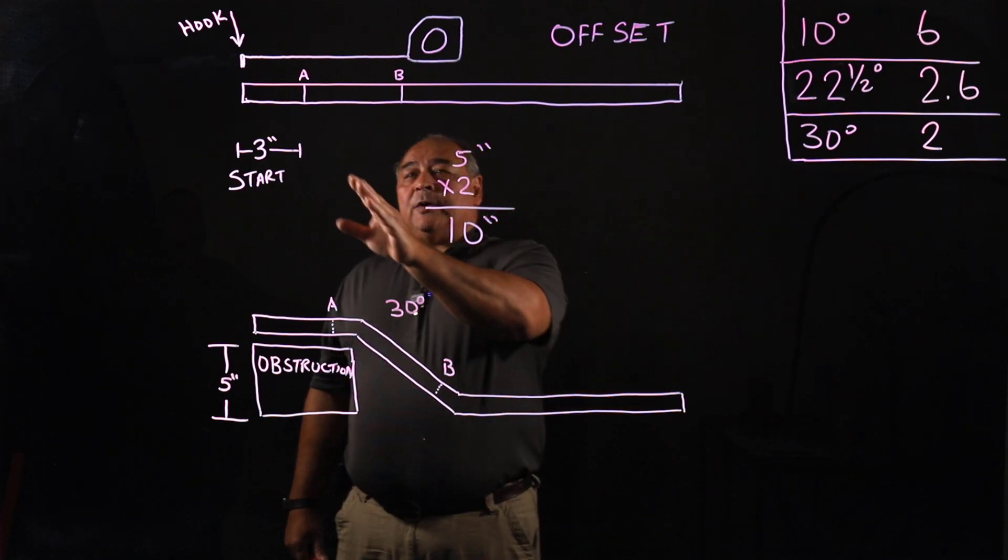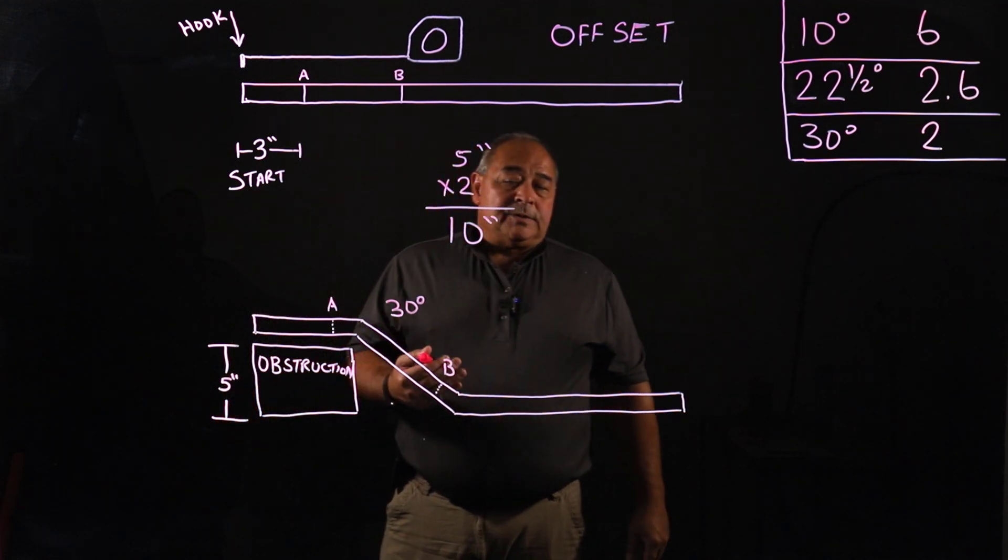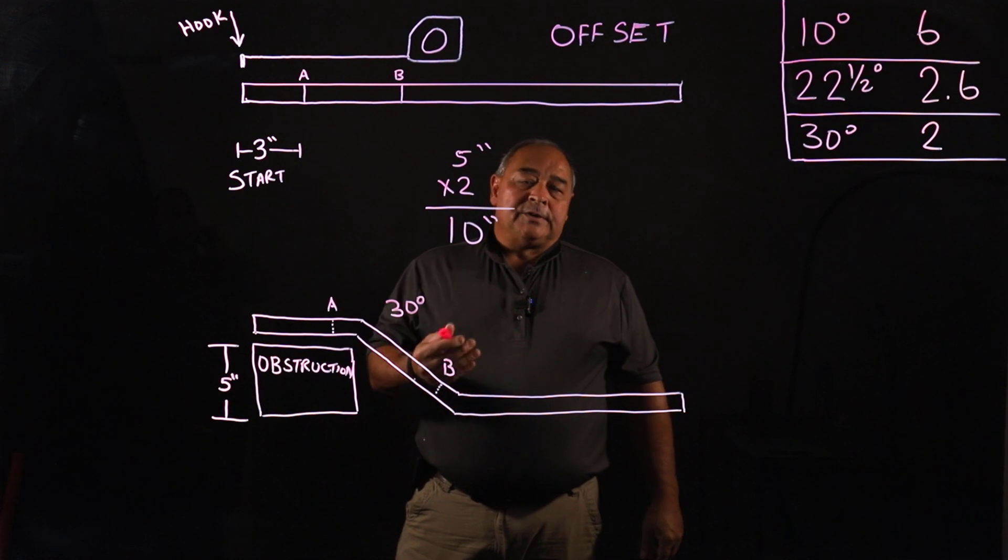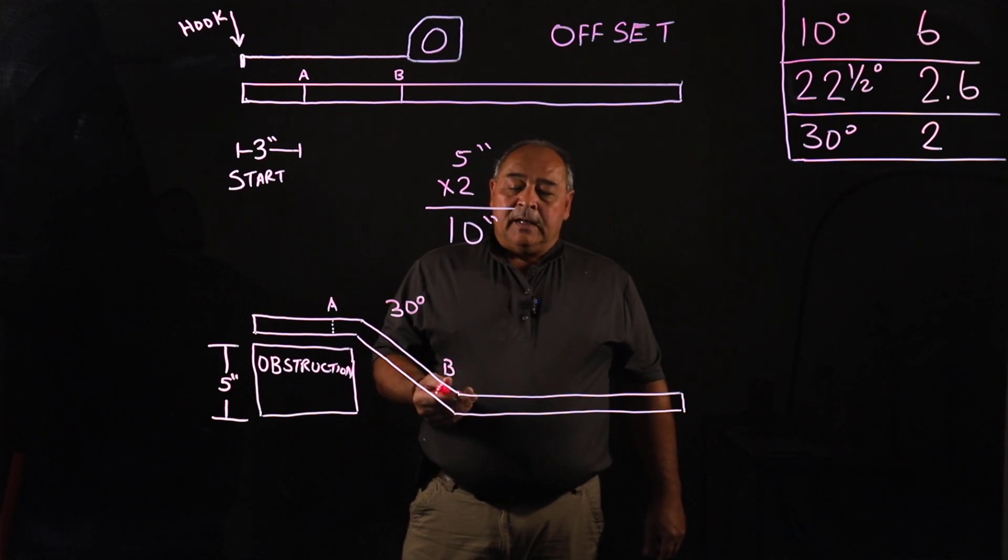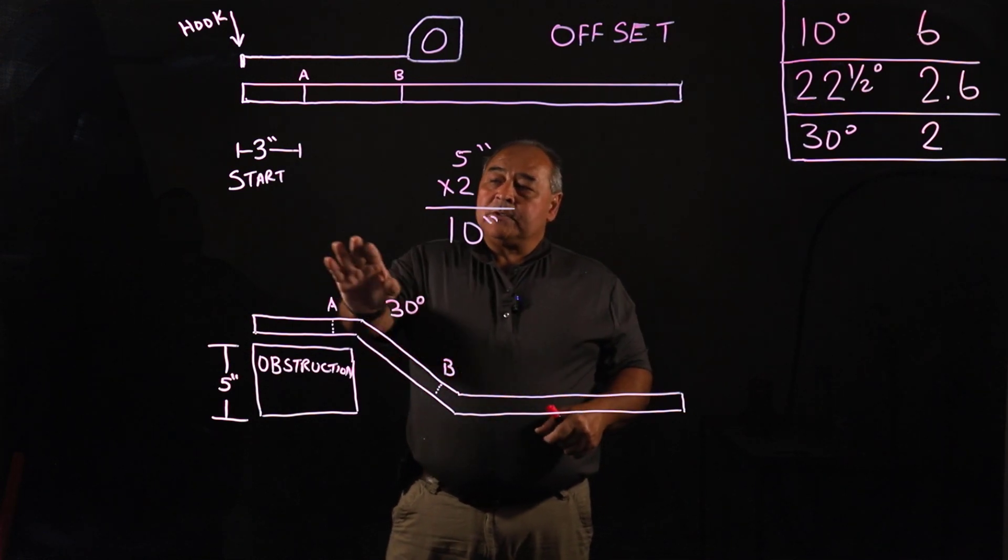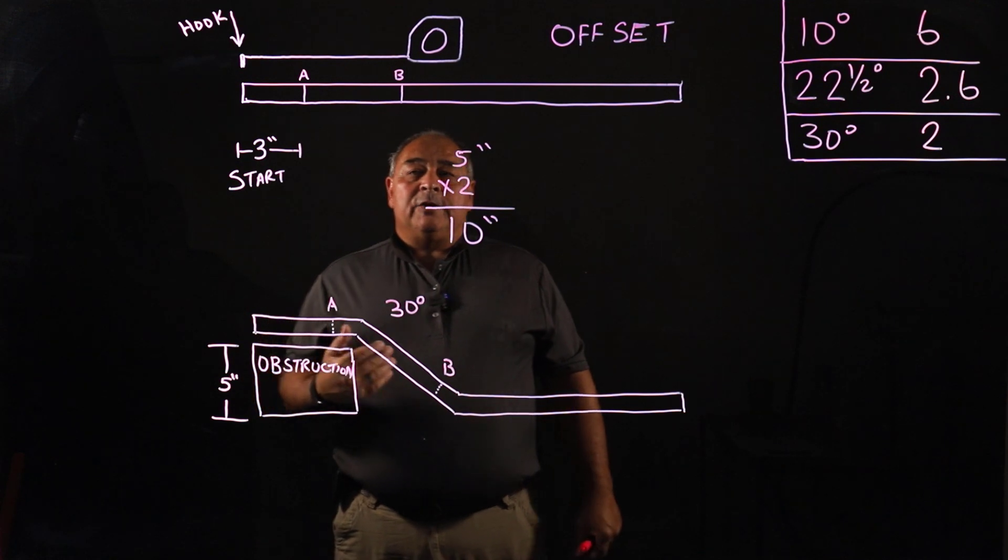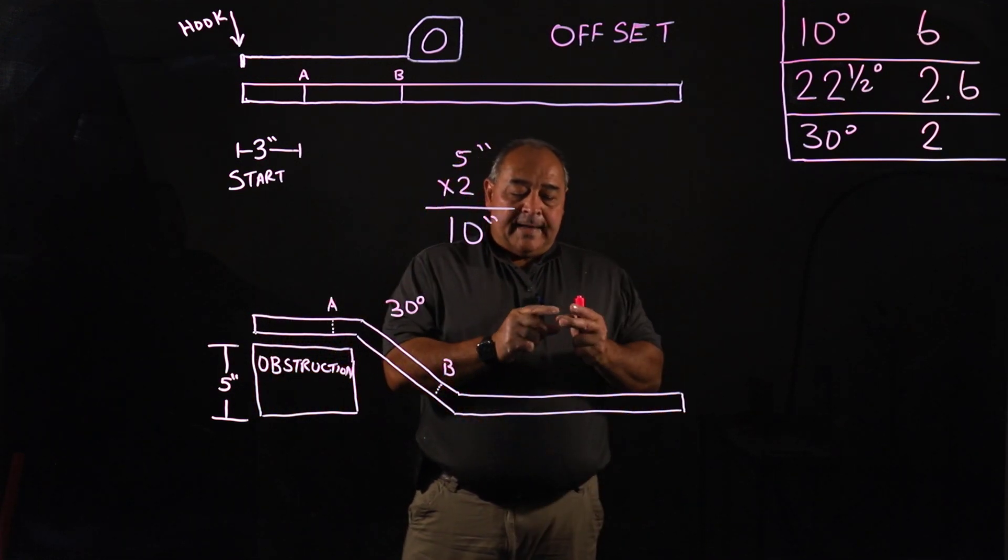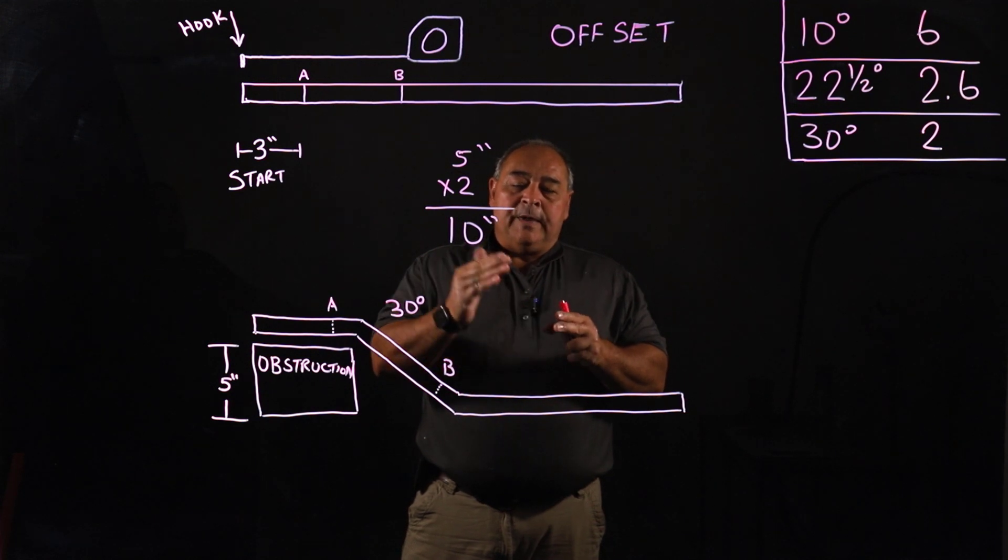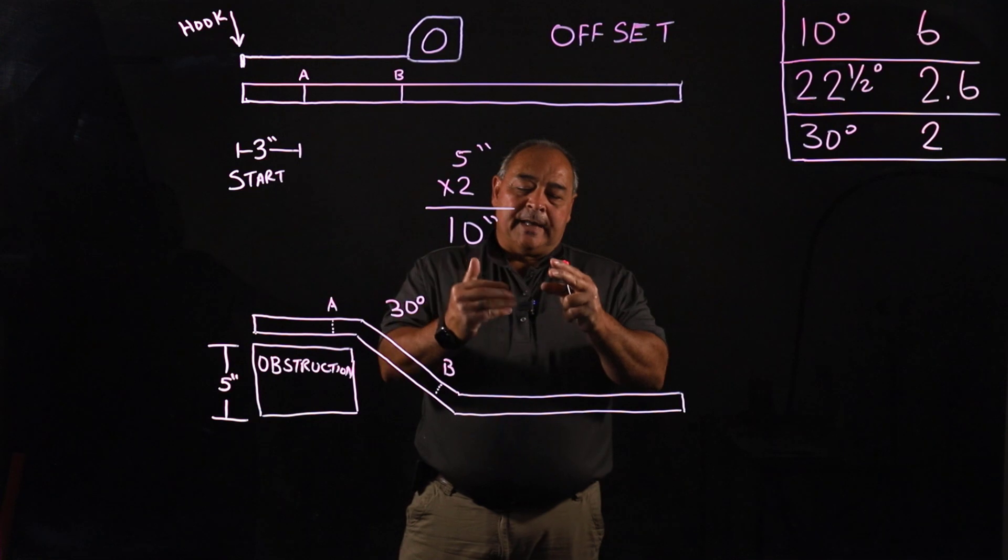Now where do you start? You're going to have an A and B mark and this is up for, again, suggestion. Some people will say different than what I'm going to suggest, and some people will have a reason to start at a different place. I'm going to suggest that we start at three inches from the end of the pipe. The reason why is the bender itself has some meat between where the angle starts and where the bend hook actually connects.